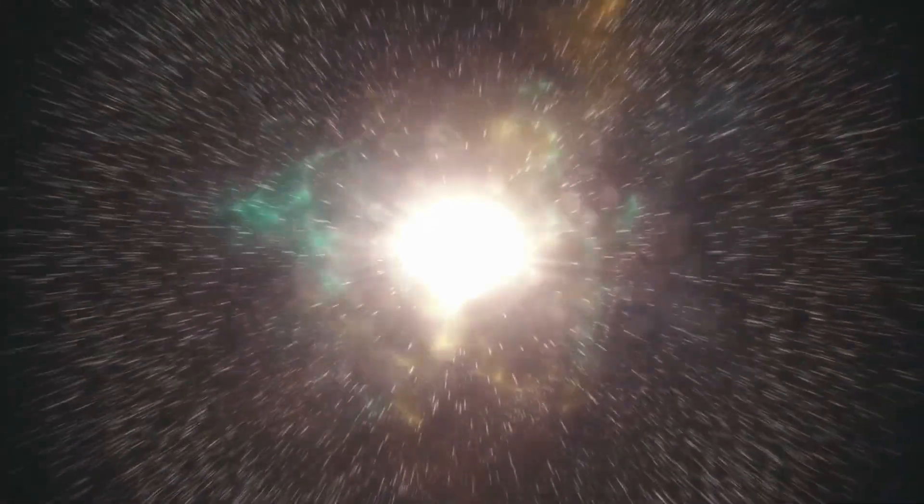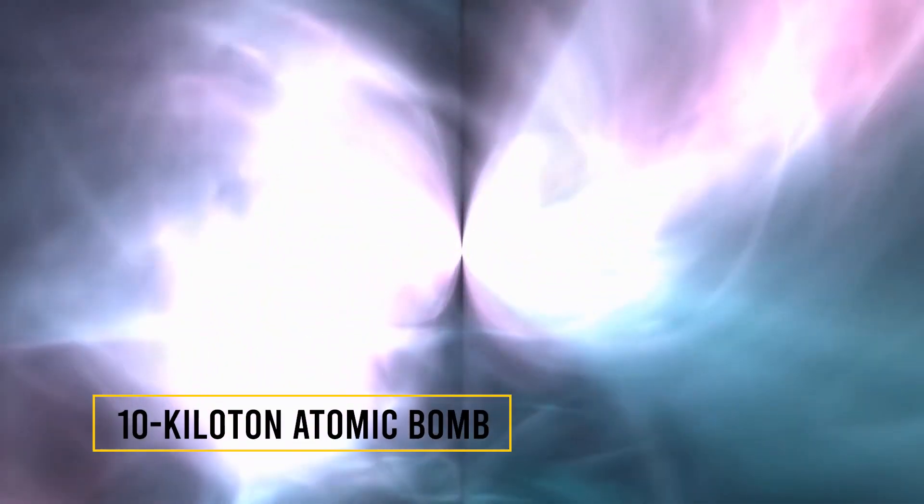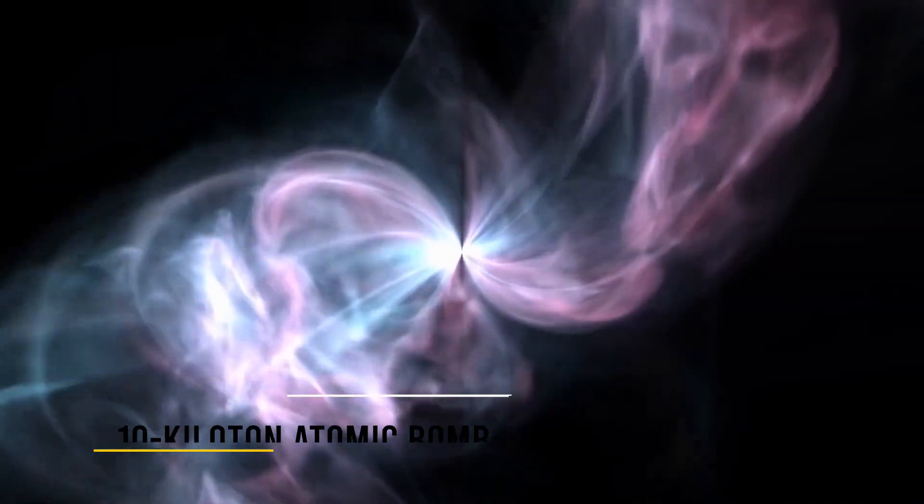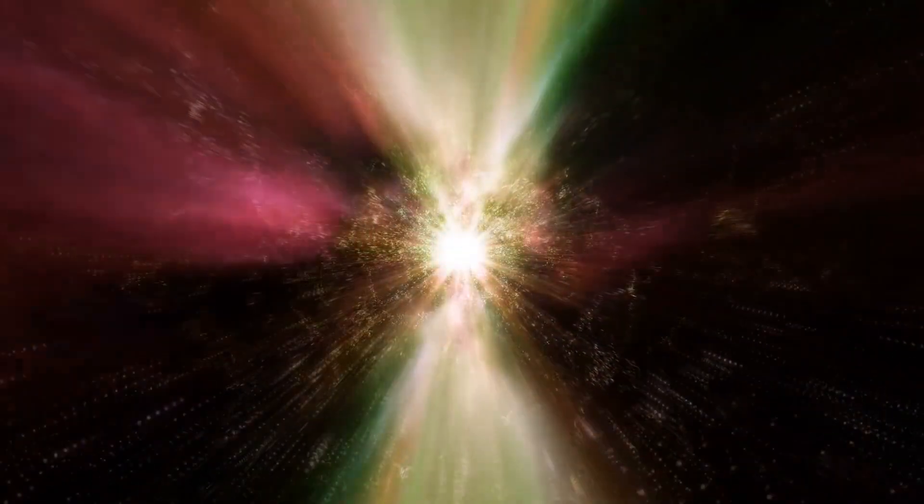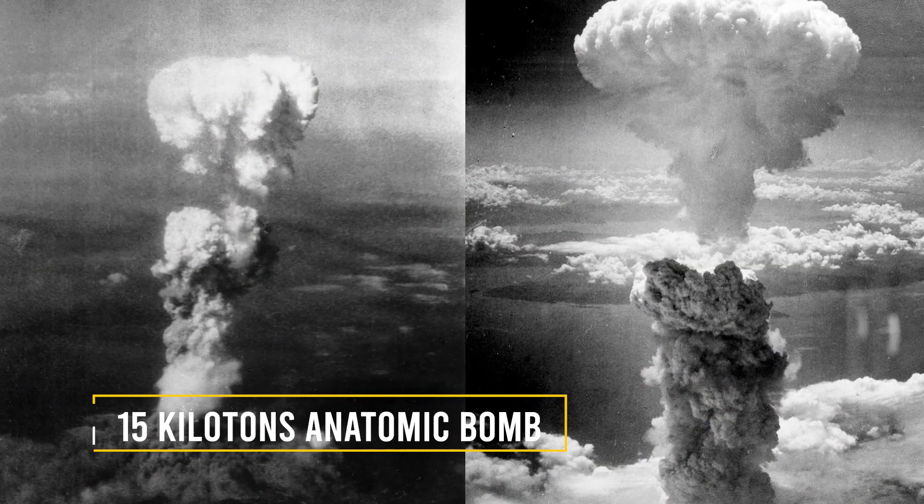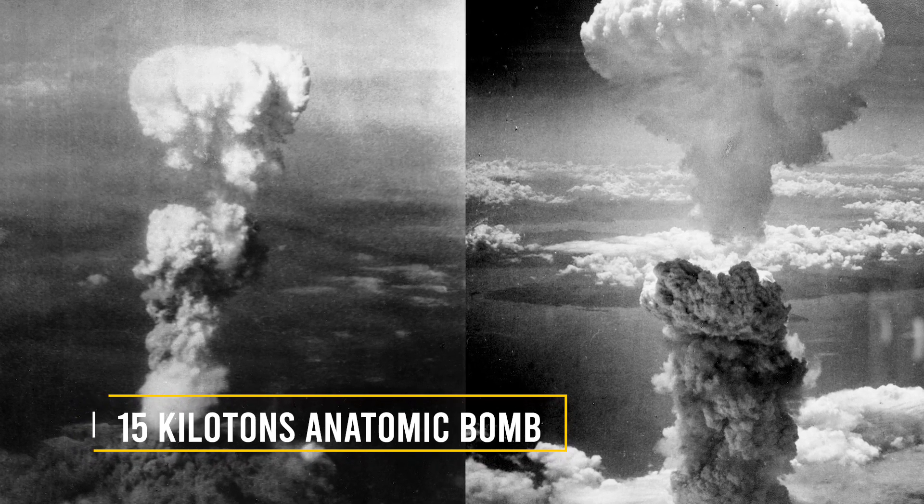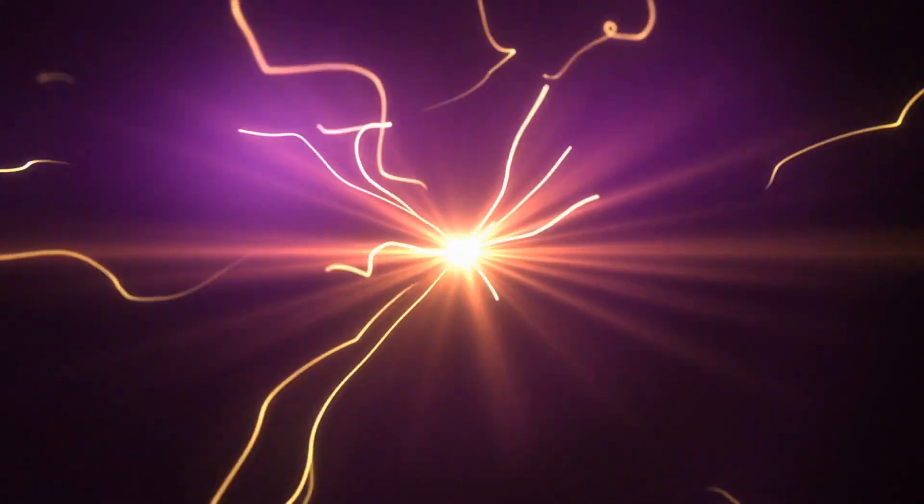To give a figure, the annihilation of one gram of anti-matter will produce 100 trillion joules of energy. An equivalent is detonating a 10 kiloton atomic bomb. Imagine the carnage. To give a clearer picture, Hiroshima was destroyed by a 15 kiloton atomic bomb, and only one gram of anti-matter can make more than half of that.